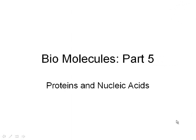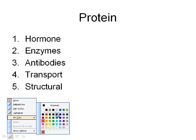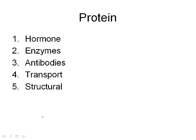Welcome back — we're looking at part five of our biomolecules unit, covering proteins and nucleic acids today. When we look at proteins, we start with their functions: hormones, enzymes, antibodies, transport, and structural. These form a nice acronym called HEATS. So when you're thinking about the function of proteins, think about HEATS. Hormones are messengers.